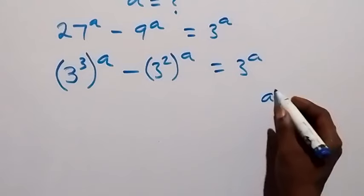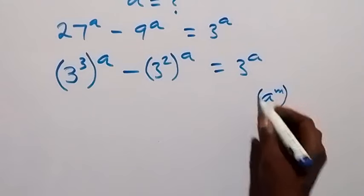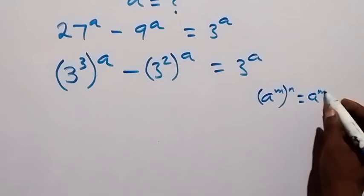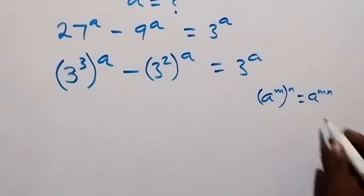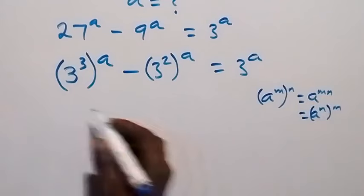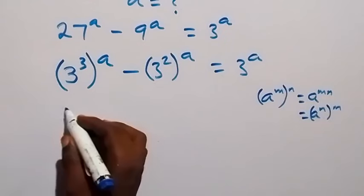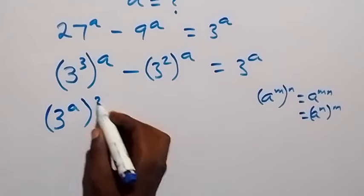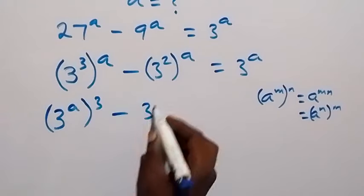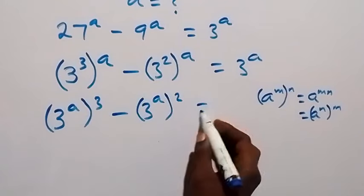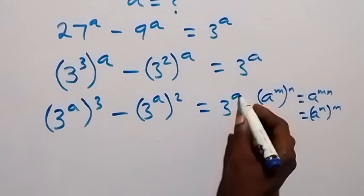When we have a raised to power m, raised to power n, it is the same as a raised to power m times n, and we can interchange the powers. So this becomes 3 raised to power a, then raised to power 3, minus 3 raised to power a, then raised to power 2, which equals to 3 raised to power a.